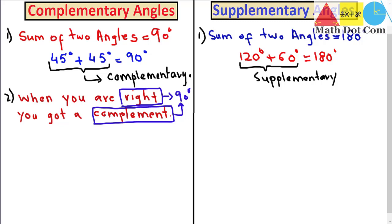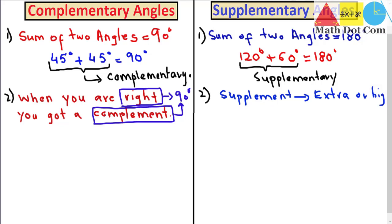This is how you can memorize complementary angles. For supplementary angles, you can memorize them by the word 'supplement.' Supplement basically refers to something extra or big. Supplementary angles sum up to give 180 degrees, and 180 degrees is greater than 90 degrees, so supplementary angles are bigger compared to complementary angles.